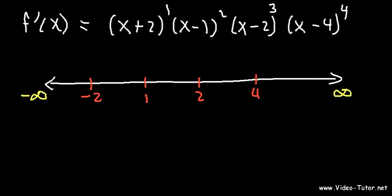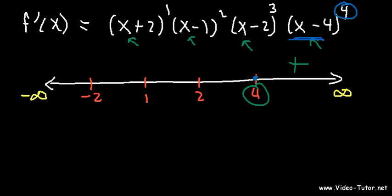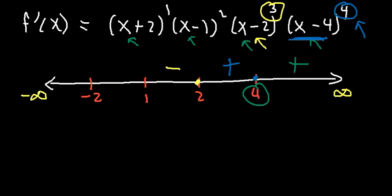Plug in a number greater than 4, like 5: every factor gives a positive result, so it's positive to the right of 4. Now, the factor (x − 4) has multiplicity 4 — whenever the multiplicity is even it's not going to change signs across that number; if it's odd it will change sign. So across 4 the sign stays positive. The factor (x − 2) has odd multiplicity, so it changes sign across 2 — going negative. At 1, the multiplicity is even, so the sign stays the same — still negative. At negative 2, it's odd, so it changes sign — going positive.